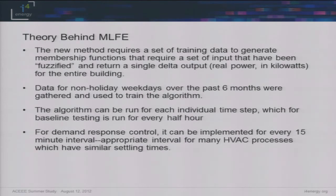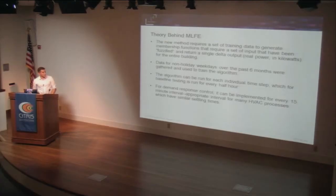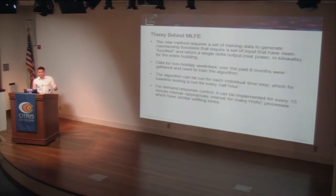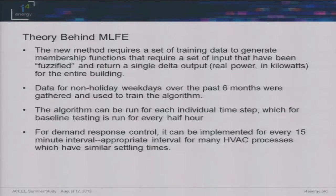We ran the model for each individual time step — in our case 30-minute time steps for an entire day from 12 o'clock to 5:30, basically doing a test for every half hour. We can change this to five-minute or 15-minute intervals if we have the data. Generally, we feel like a lot of the systems in the building have settling times greater than five minutes, so 15-minute intervals for thermal systems is a pretty good target, and the computational time is very minimal.